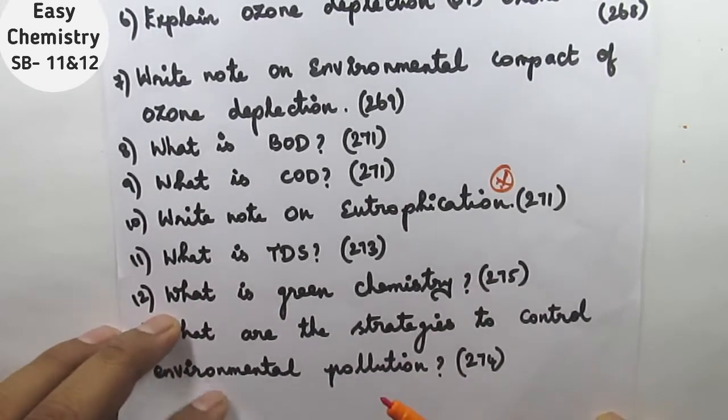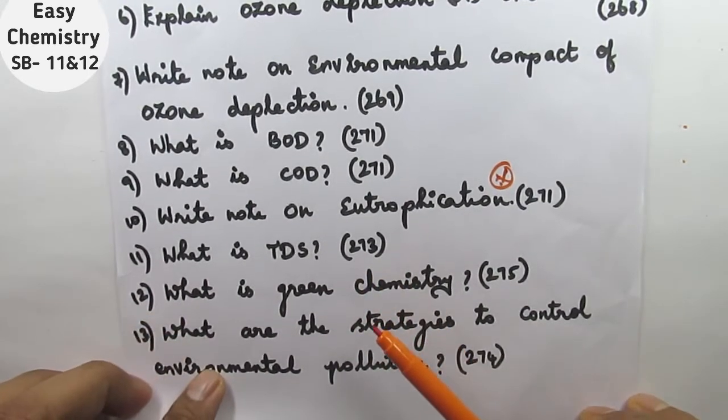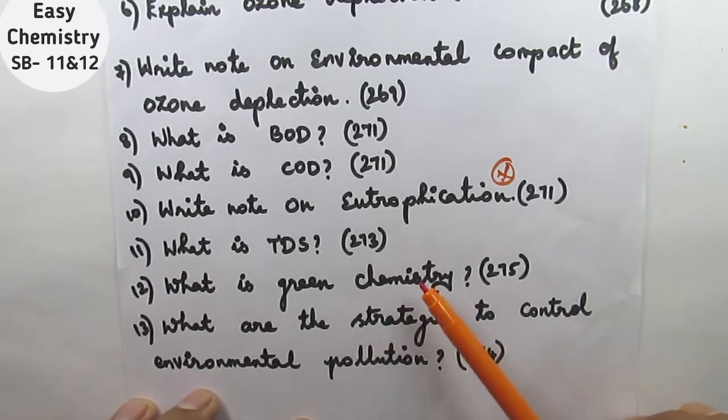Question number eleven, what is TDS? Page number 273. Question number twelve, what is green chemistry? Page number 275.